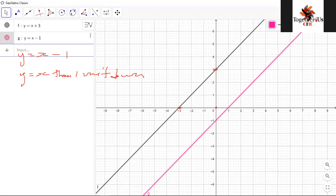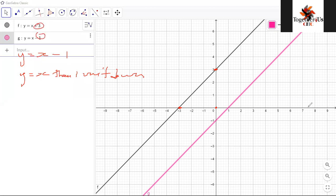This is why we call it the y-intercept. We call it the y-intercept because it is actually on the y-axis, and it is at a point where x is actually zero. The x-coordinate is zero.